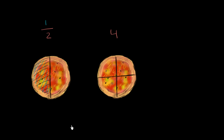But let's say that I want to eat the same amount of pizza. How many of these four equal pieces would I have to eat? I would eat this piece and this piece right over here. I've eaten the same amount of the pizza. Each of these pieces got cut into two pieces when I cut the whole pizza this way. And so now I have to eat two slices of the four as opposed to one slice of the two. So I just ate two out of the four slices.